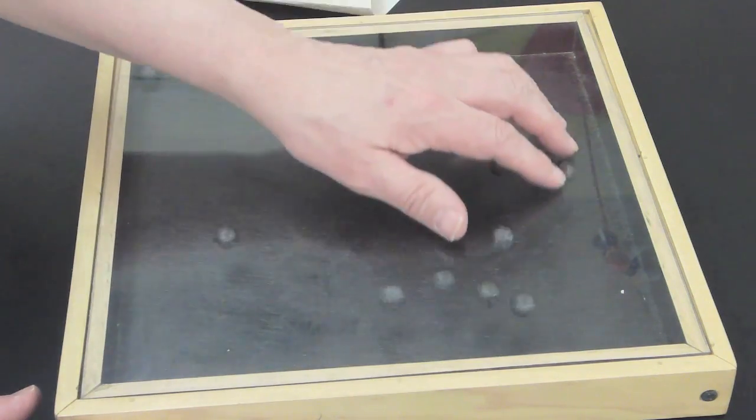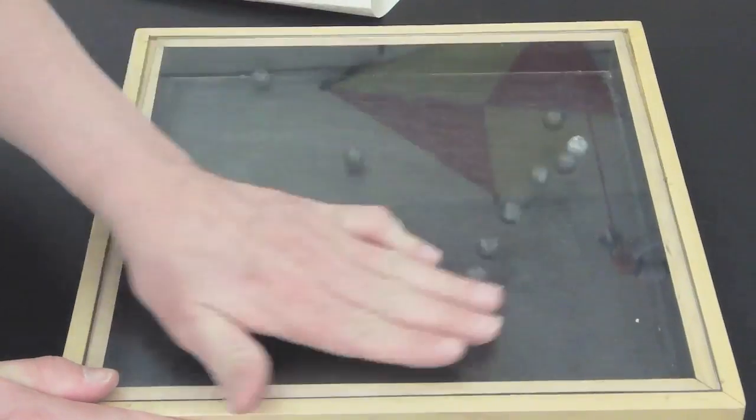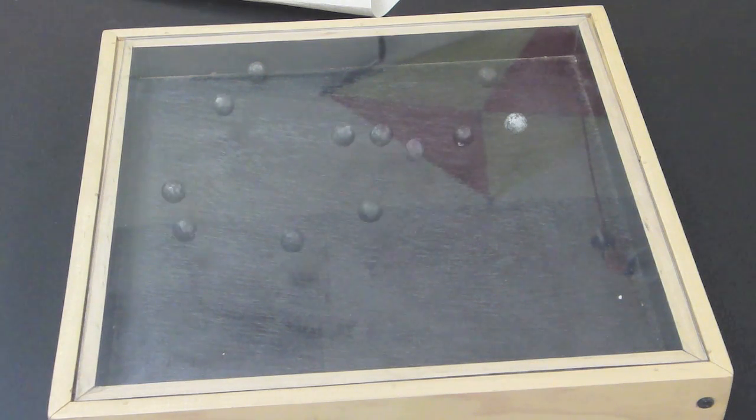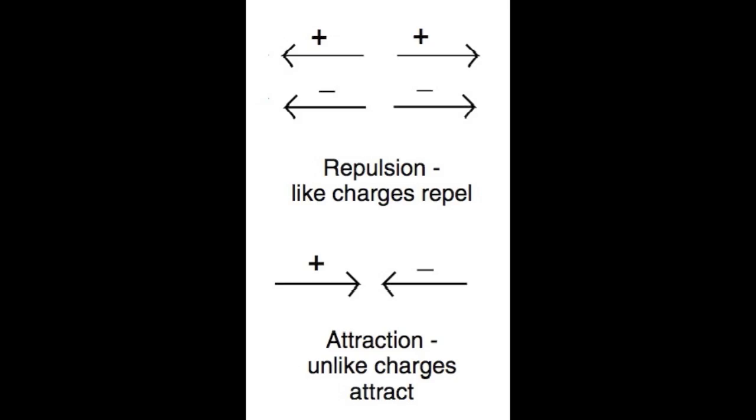So, what's causing them to move? Well, by rubbing the box with my hand or a cloth of some type, I'm actually creating a static charge. Now, we know that like charges repel. Positive repels positive, negative repels negative, and positive and negative charges attract each other.